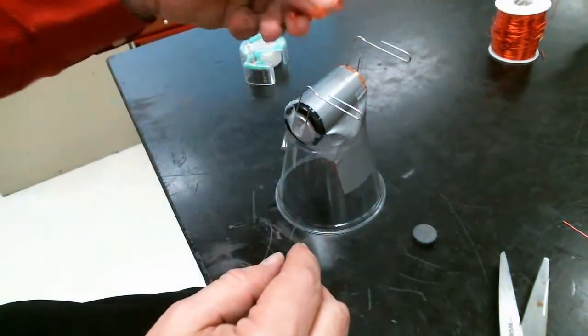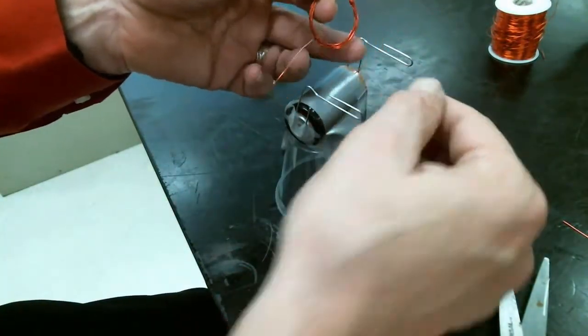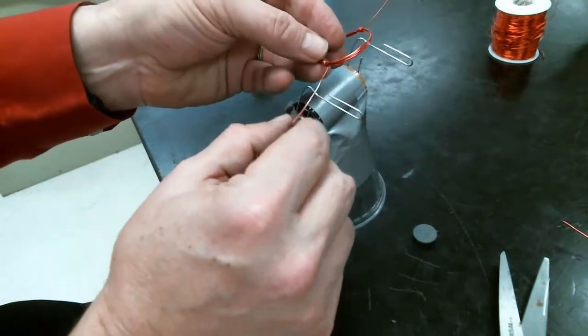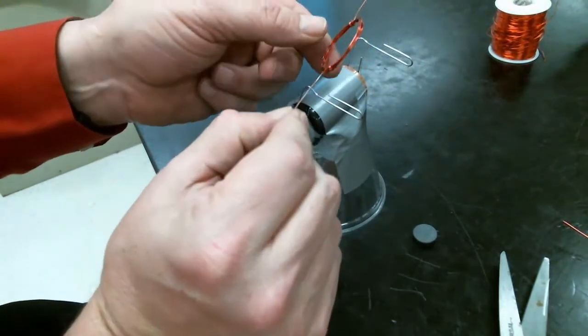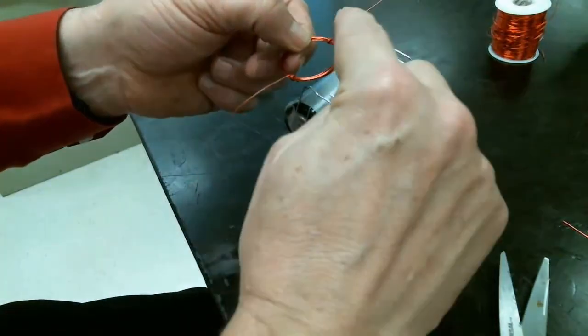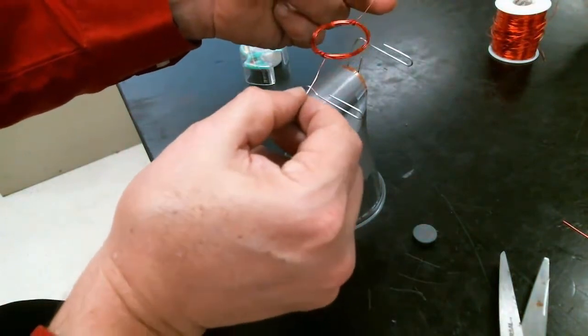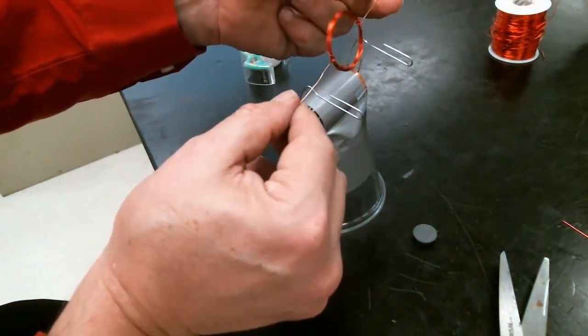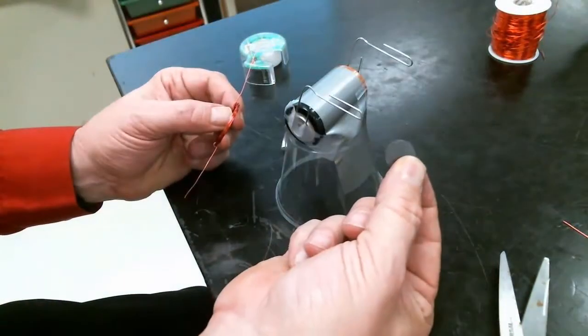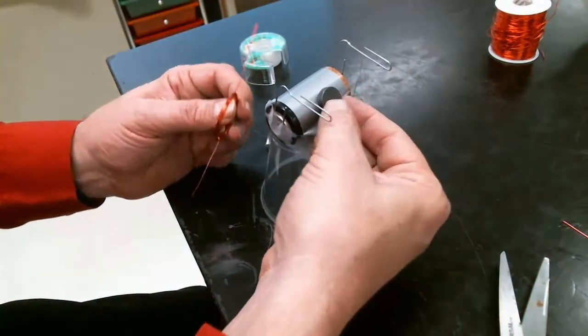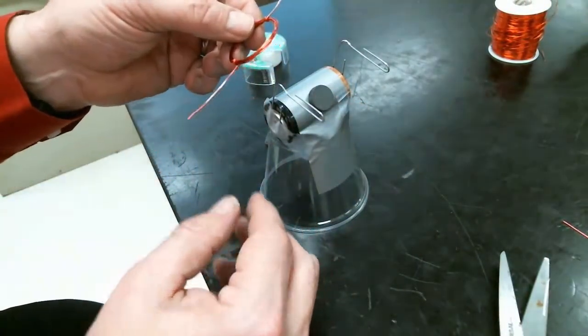So now our coil will go across here like this. And it will turn. And as it turns, it will come into contact with the bare wire. And then it will turn a little more. And then it will not be in contact because it will be touching the insulation. So as it turns, the magnetic field will turn on and off and on and off. Well, what good is that? Well, if you've got another magnet, then it will repel or attract as it turns on and off.